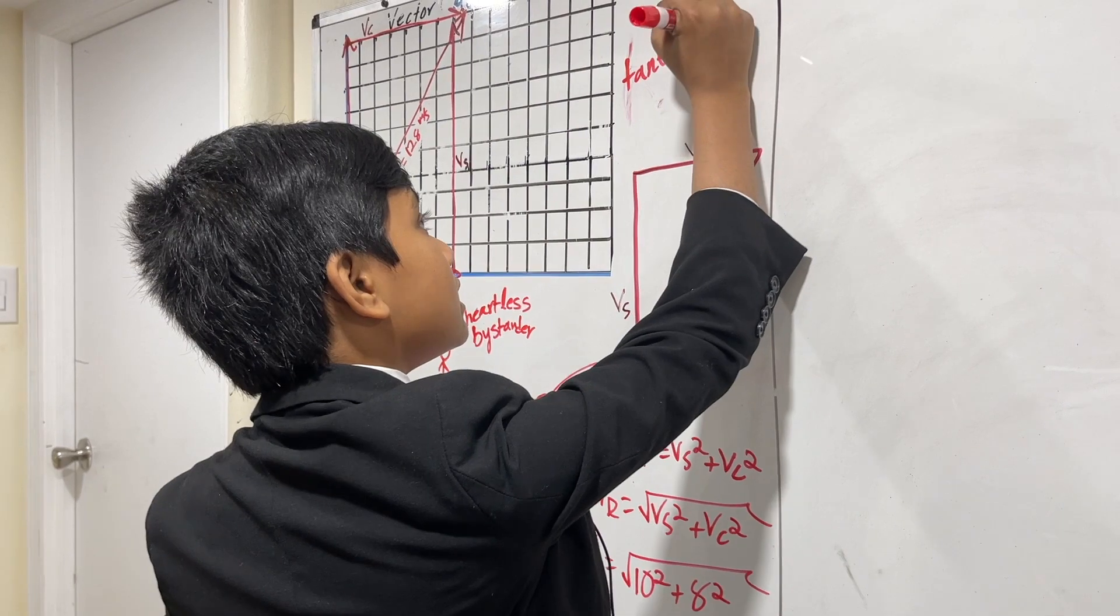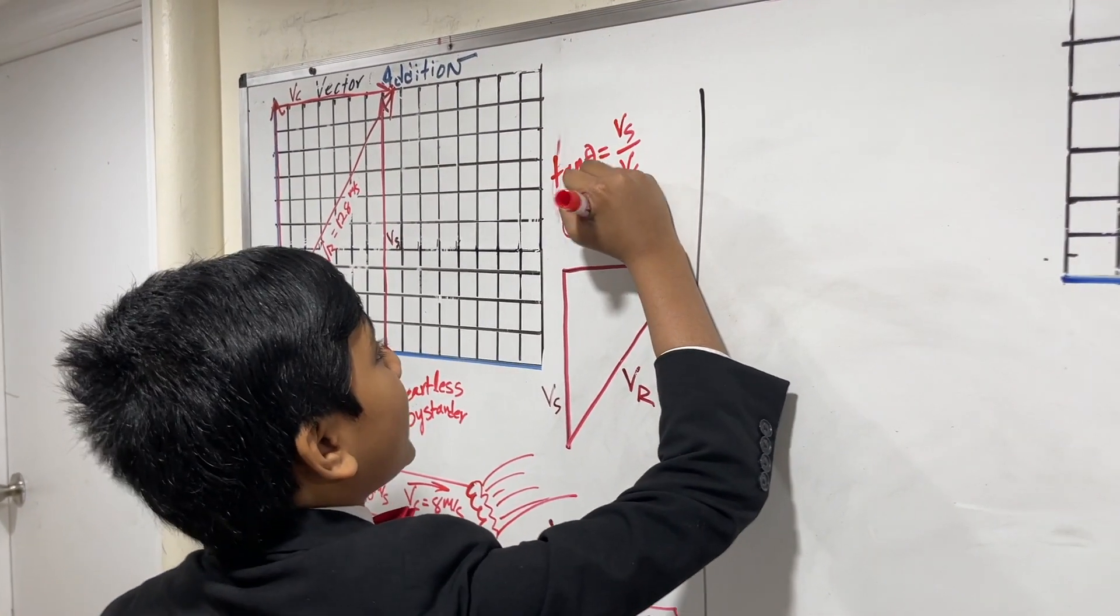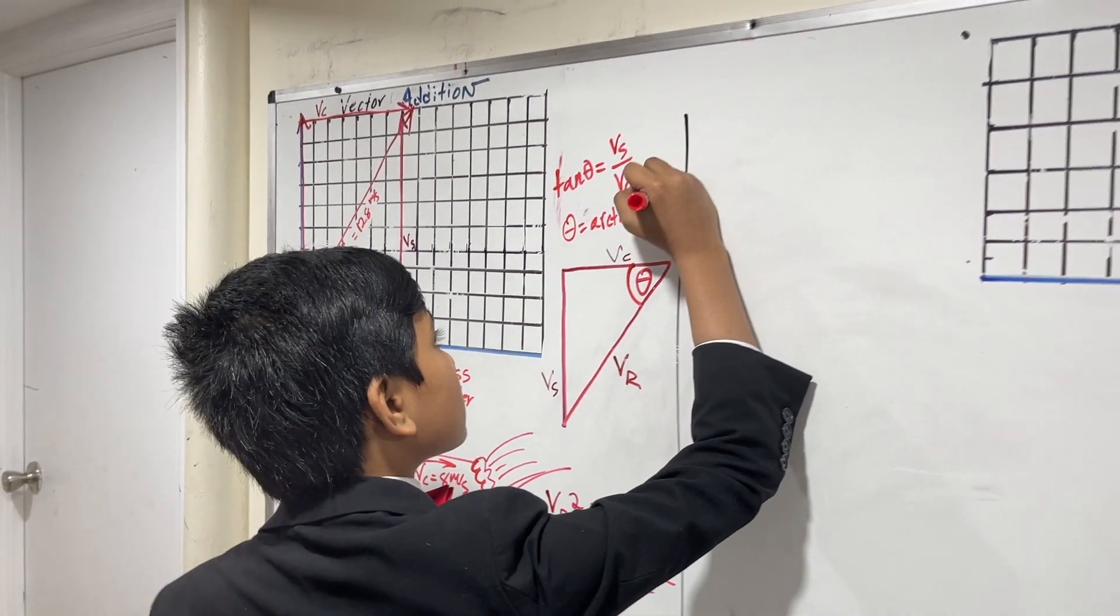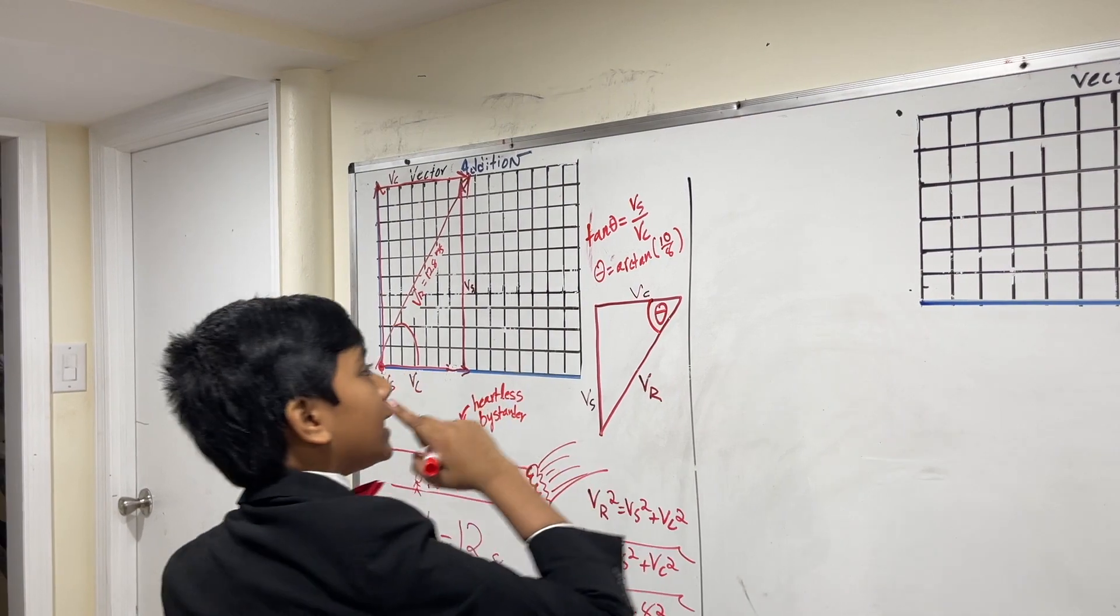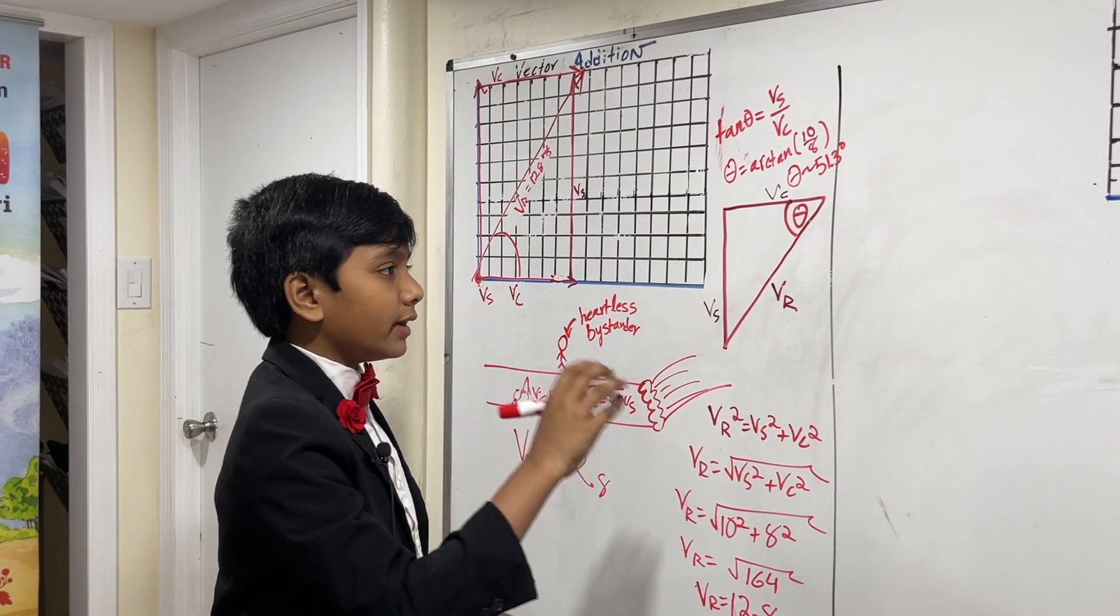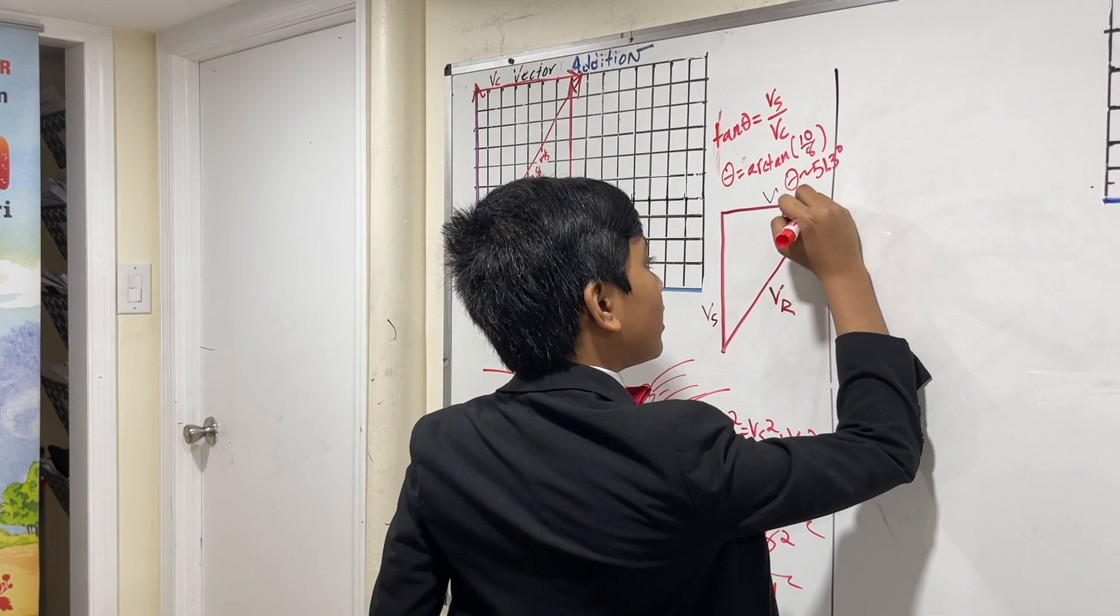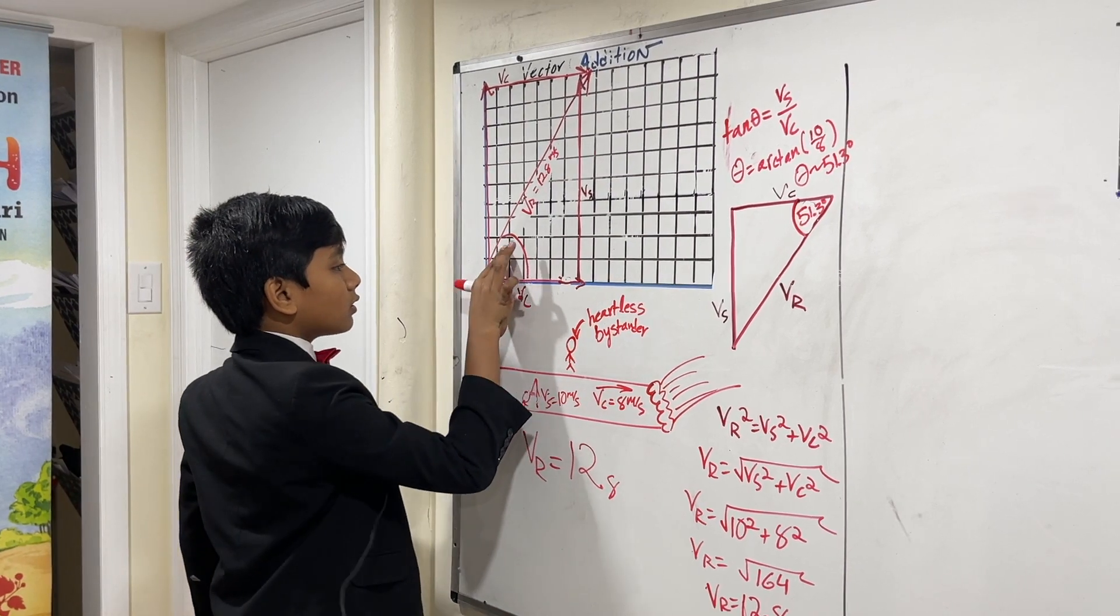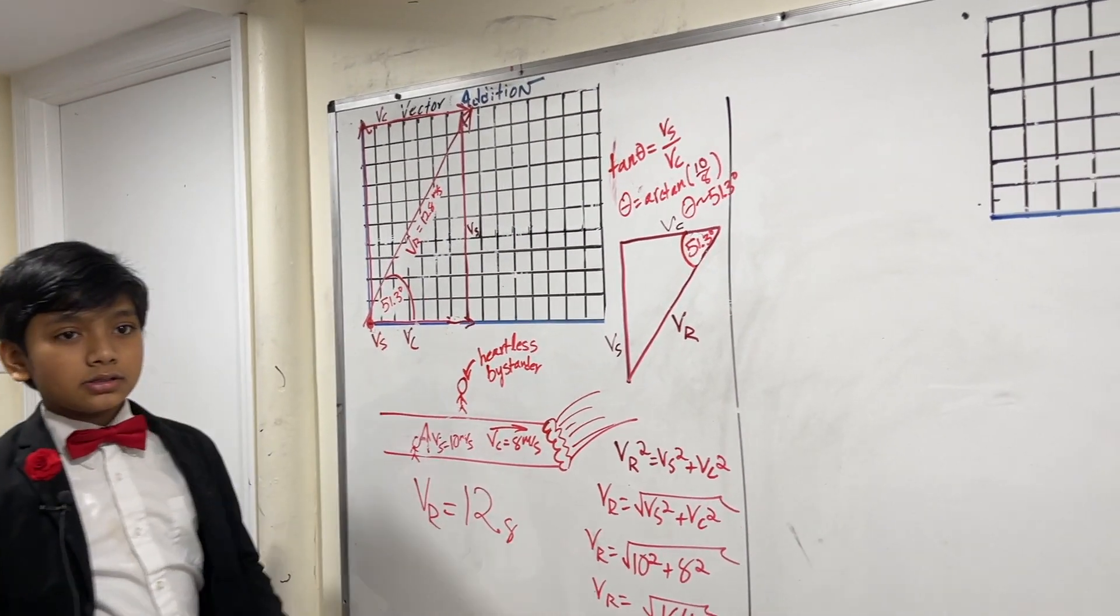So, opposite is V S, and adjacent is V C. So, that means theta is simply arctan of V S over V C. What is V S? Well, V S was 10, and V C was 8. So, that means it's arctan of 10 over 8, 51.3 degrees. All right? So, we now know that this is 51.3 degrees. So, by the way. Oh, yeah. Let's draw that over here. This is 51.3 degrees.